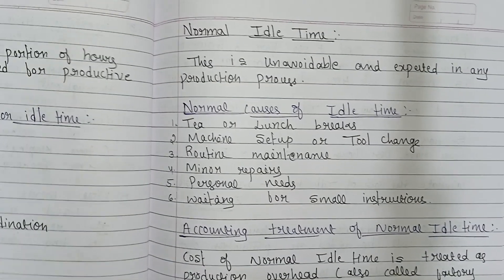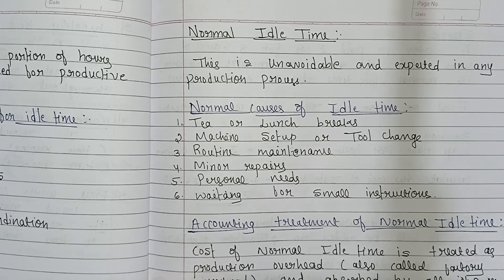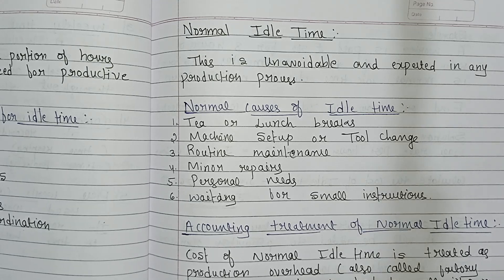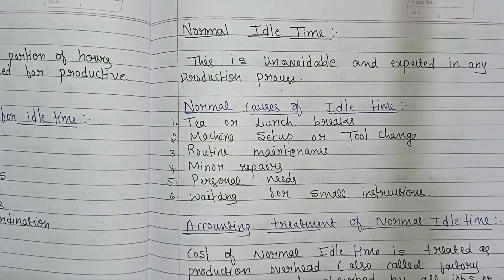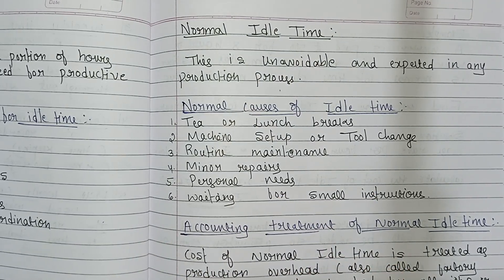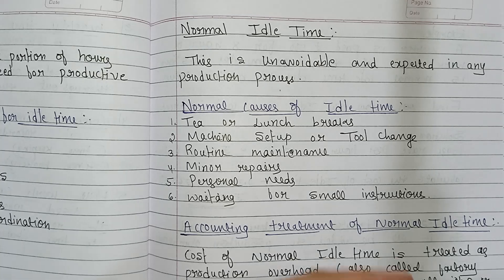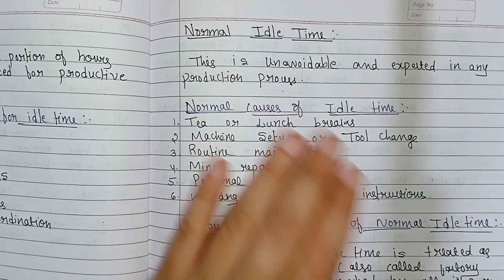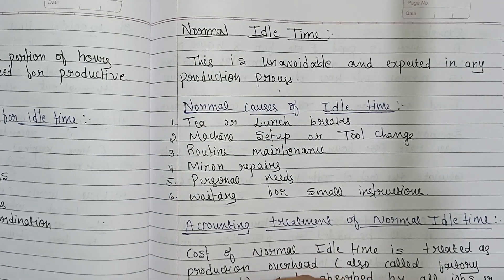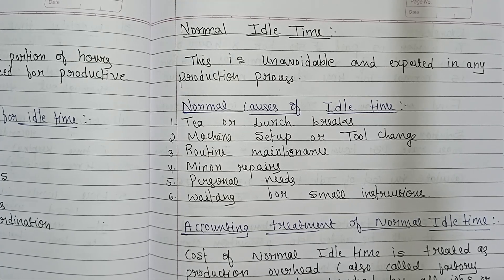Let's discuss normal idle time. Normal idle time is unavoidable and expected in any production process. Unavoidable means it cannot be prevented. Expected means workers already know that some small delays — like tea breaks or machine setup — will happen during work in any production process.